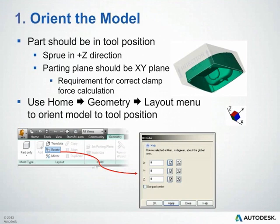Step one is to orient the model. The part should be in tool position, where the sprue is in the positive z-direction and your intended parting plane is on the x-y plane. This is required for accurate clamp force predictions — if your part is not oriented correctly, your clamp force predictions will be off. It's also good for later when you go to model your feed system, as it will make your life a lot easier.